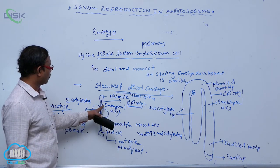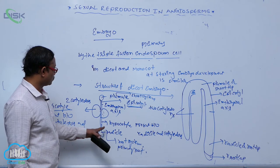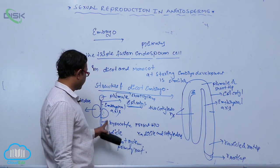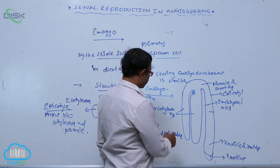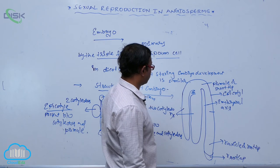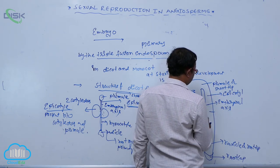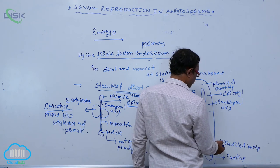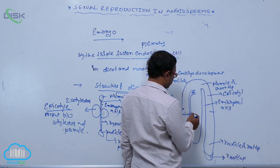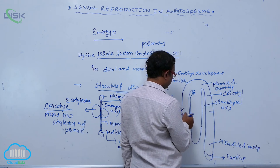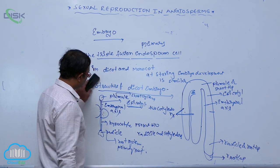To summarize: the embryo has an embryonal axis. Above the embryonal axis is the plumule, also known as the shoot tip. Below is the radicle, or root tip, covered by a sheath-like structure called the root cap. The hypocotyl is present between the radicle and cotyledons. The epicotyl is between the cotyledons and plumule. Two cotyledons are attached to the embryonal axis, making this a dicotyledonous plant.